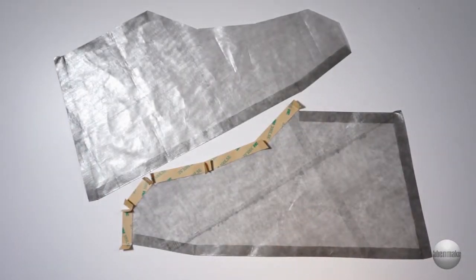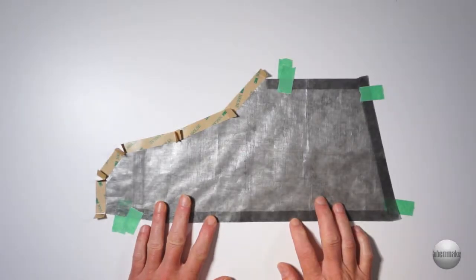All hems are done and the tape is applied to the center seam. The pieces are aligned and ready to be taped together.